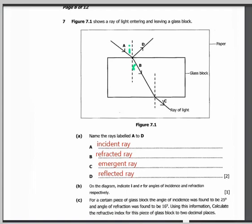For a certain piece of glass block the angle of incidence was found to be 25 degrees and angle of refraction was found to be 16 degrees. Using this information calculate the refractive index for this piece of glass block to two decimal places.